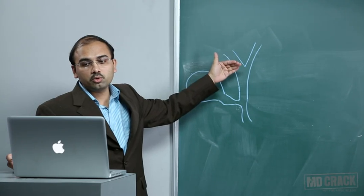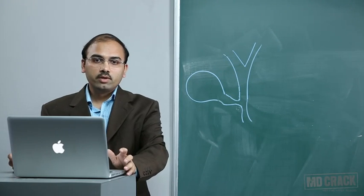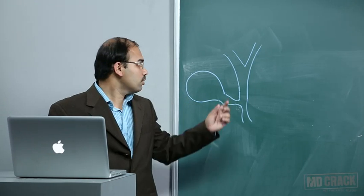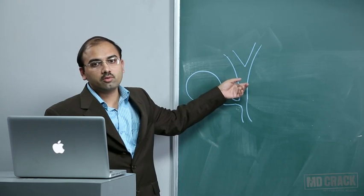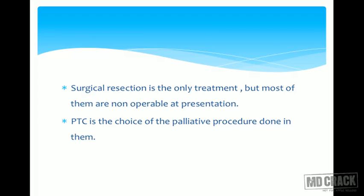Type 2 tumors onwards have involvement of the bile duct confluence — not type 1. Painless jaundice is the most common presentation. Pruritus, mild right upper quadrant pain, anorexia, fatigue, and weight loss may be present along with cholangitis when there is ductal obstruction.